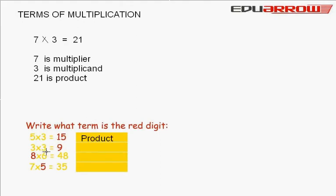Now, 3 multiplied by 3 is equal to 9. It is also the product.